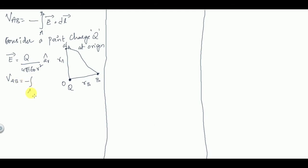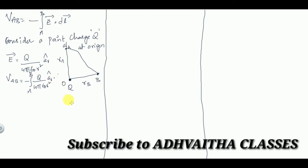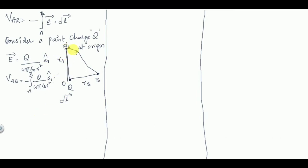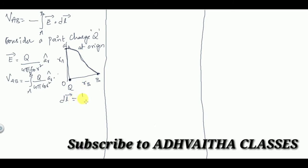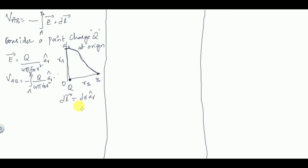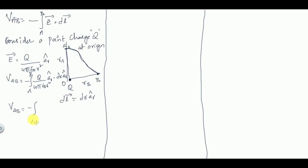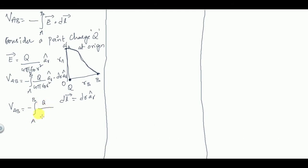Then VAB = −∫(A to B) [Q/(4πε₀R²)] âR · dL̄. Here only the distance R is changing, so dL̄ = dR · âR. Therefore VAB = −∫(RA to RB) Q/(4πε₀R²) dR.